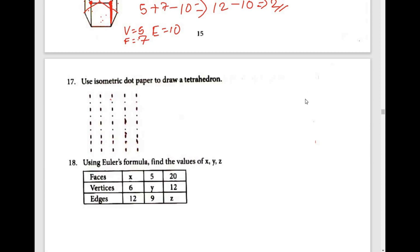Use isometric dot paper to draw a tetrahedron. If you have a dot on the top, you can connect them with a regular triangle. So this is a normal triangle. If you have a dot in the center, you can put a line on the other side. So this is a tetrahedron — you can see it as a 3D shape drawn on the isometric dot paper.